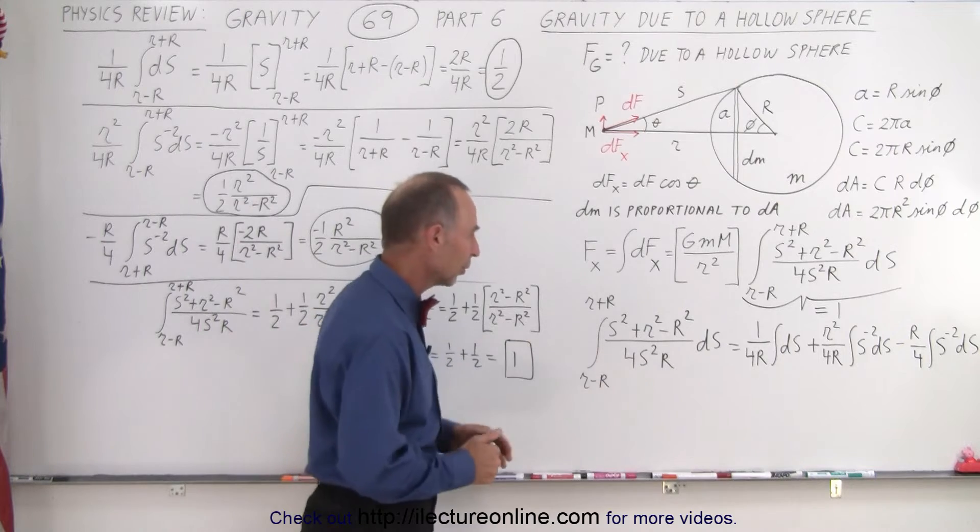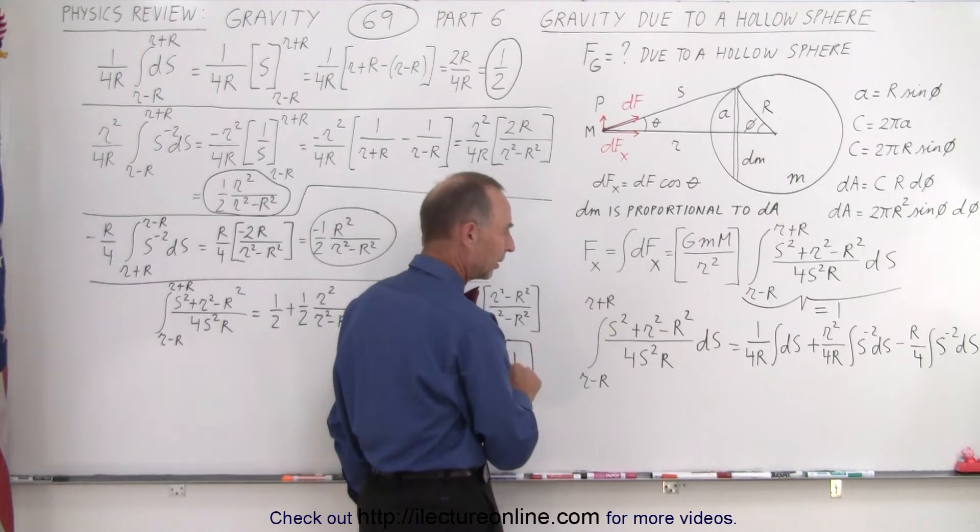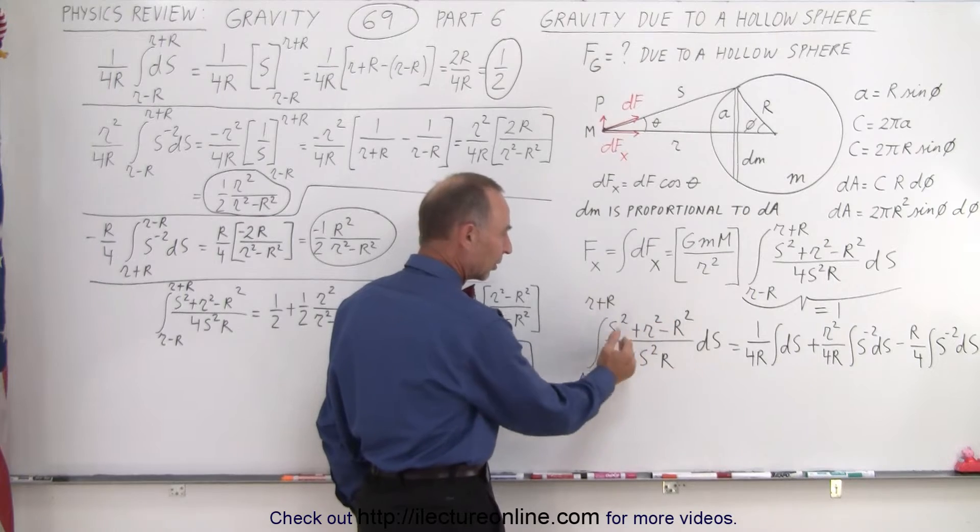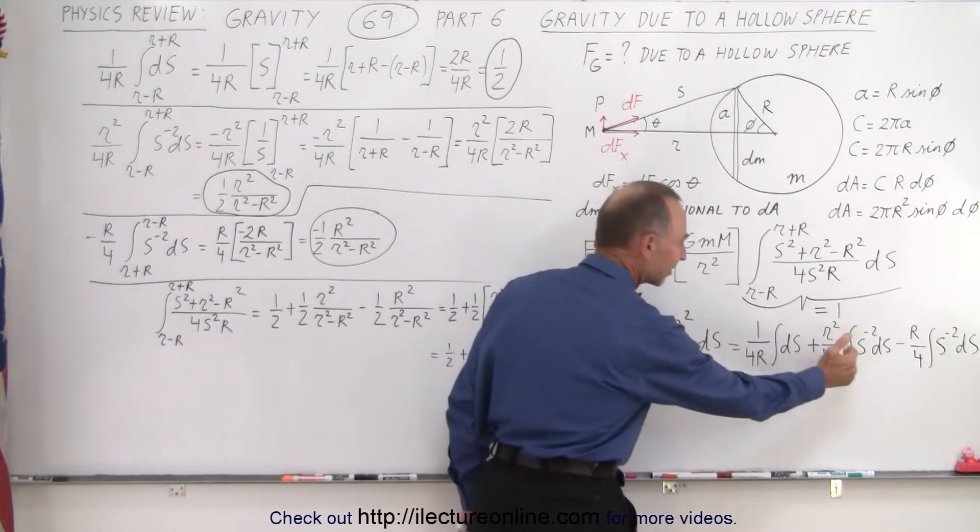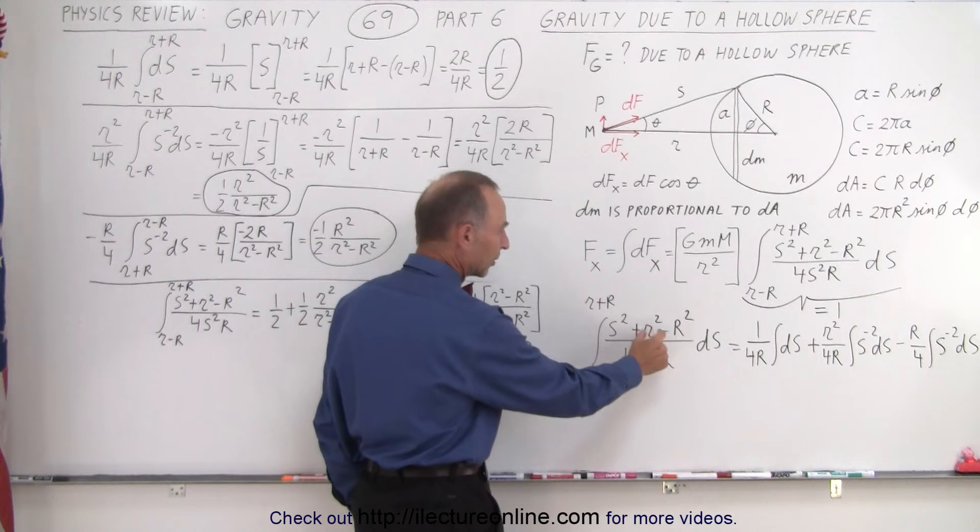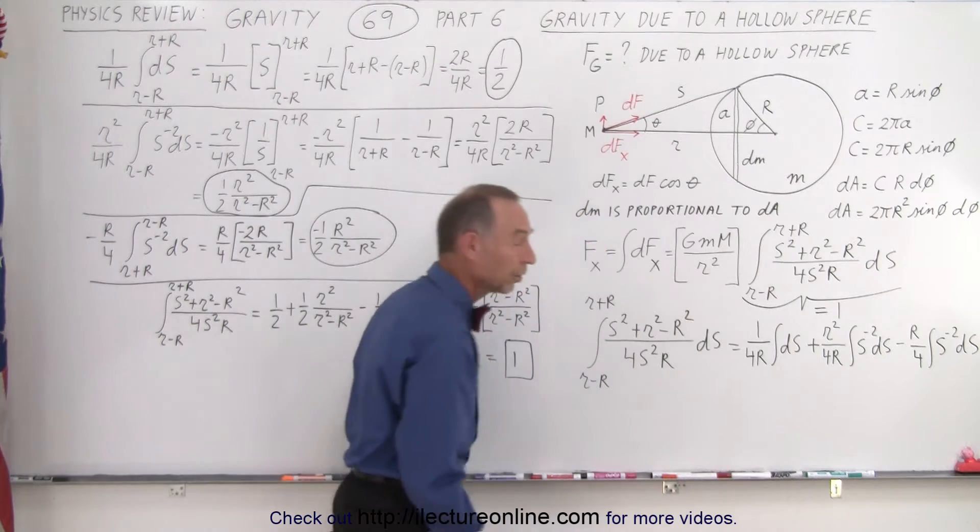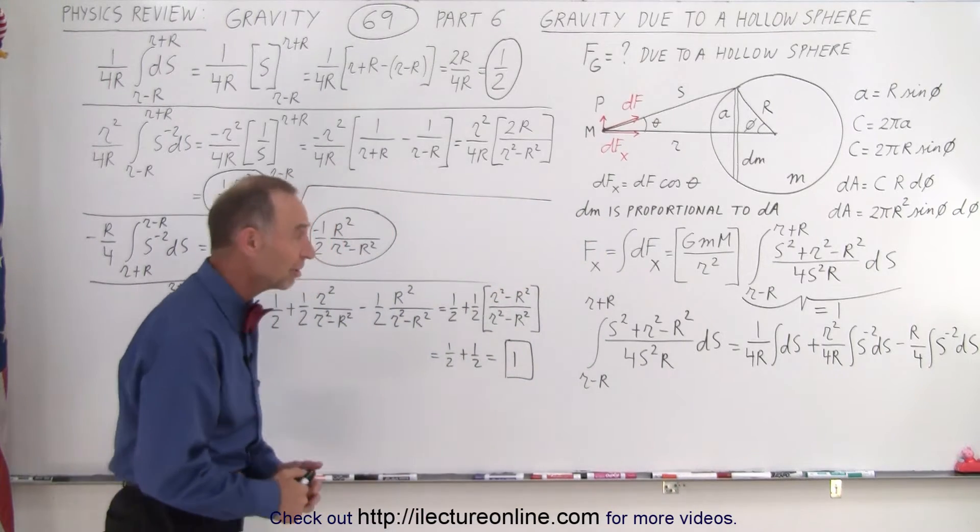So we're going to take this integral, notice the limits are from r minus r to r plus big R right here. And so what we're going to do with this integral is divide into three separate integrals. So we're going to take s squared over the denominator, little r squared over the denominator, and minus big R squared over the denominator, and then integrate each individual integral.